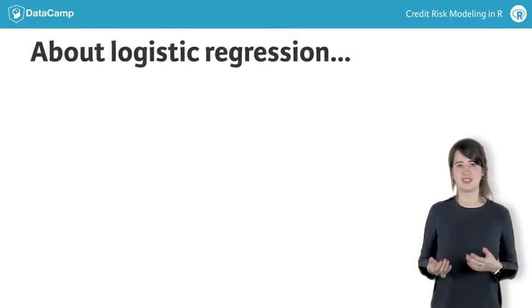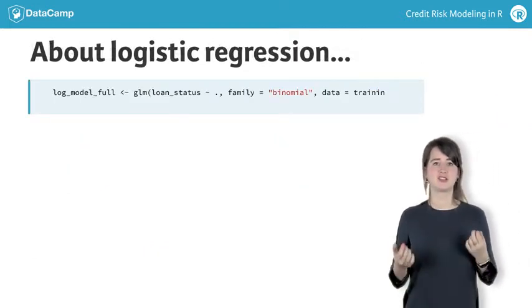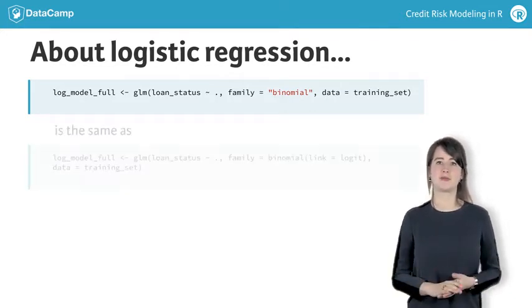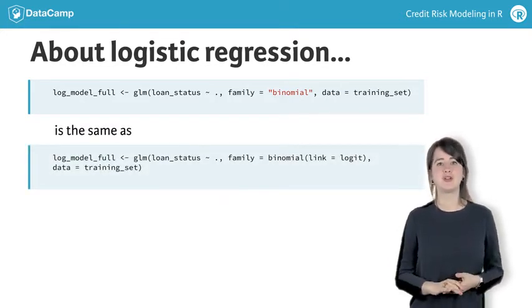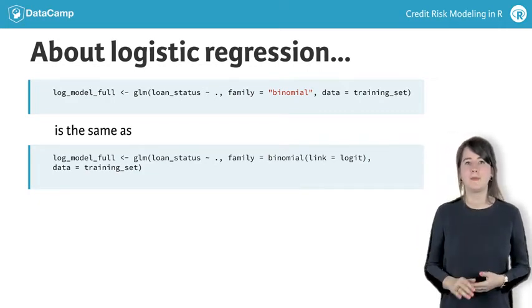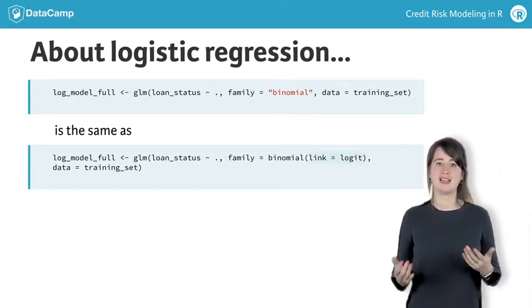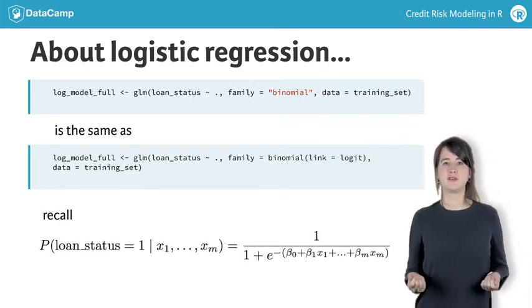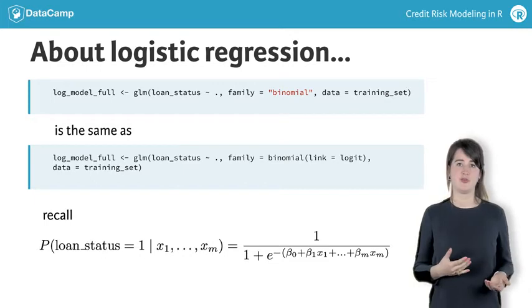To finalize this chapter, I would like to mention that the logistic regression model we've used up to now is also known as the logistic regression model with a logit link, which is the default in R, but can also be written using link equal to logit. Using the expression at the bottom of the slide, you can then compute the probability of default.